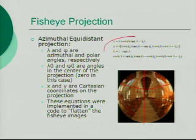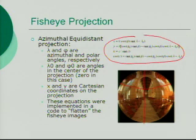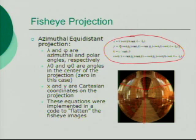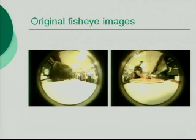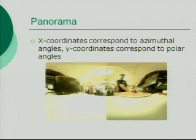These equations are used to project the spherical image onto the rectangular image, and we will be using these to make a panorama for use with our detector. Here are some fisheye lens images, and here's the panorama that we make using the software. The x-coordinates correspond to the azimuthal angles, and the y-coordinates correspond to the polar angles, so we can use data directly from the detector.